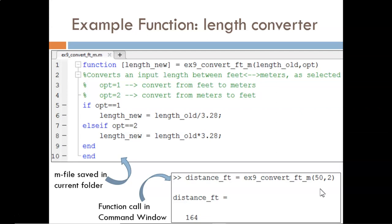Similarly, the output argument length_new never exists in the base workspace, but the value that it held, here 164, gets copied to a variable in the base workspace. In this case, the variable distance_ft will hold that 164.